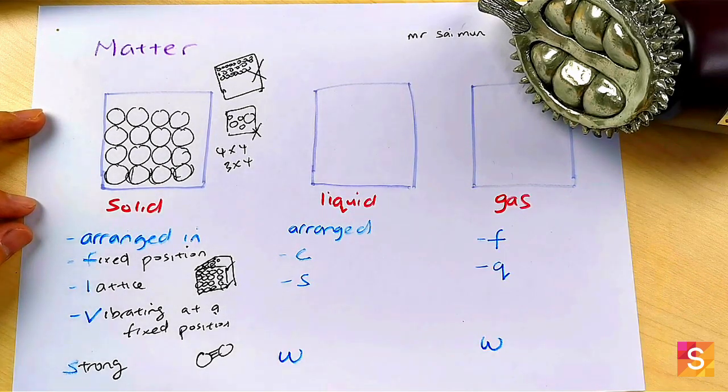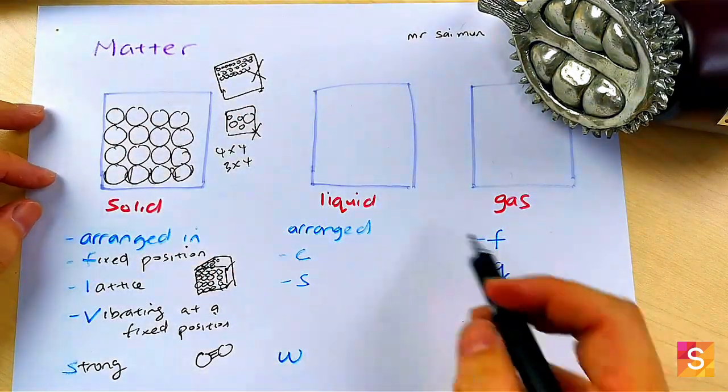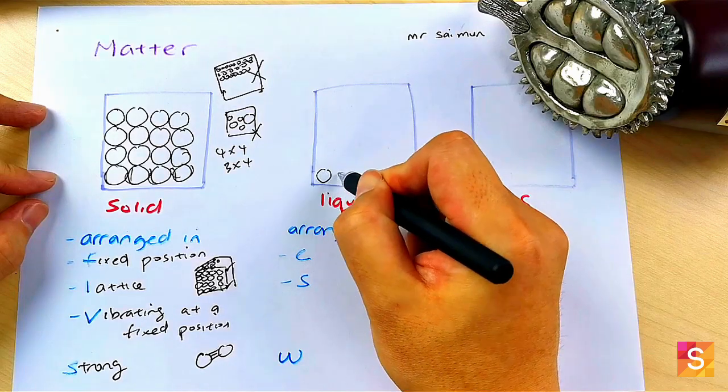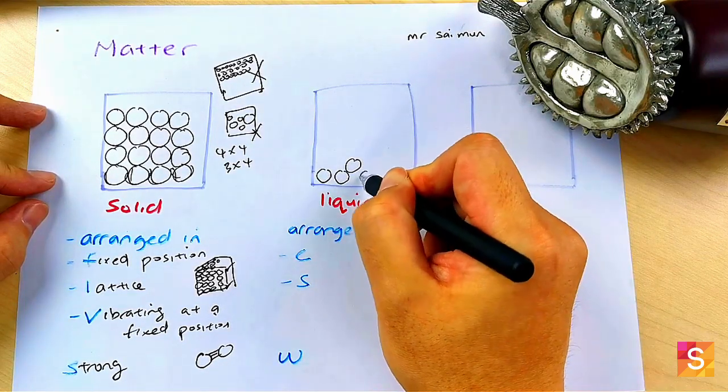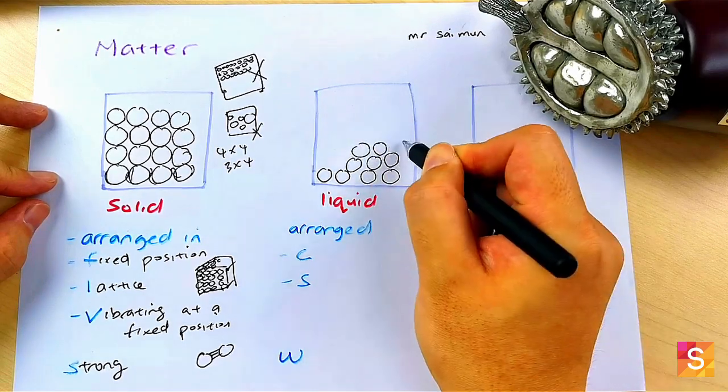And move on liquid. If they give you a box liquid, imagine all liquids are all sitting at the bottom but then it's very random, very random here and there, like water and liquid.